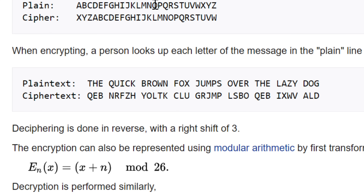Now the way that we translate between these two is really what's different about all the different cryptography methods. This is the simplest one, where we replace letters with other letters by a certain rule — this is known as the substitution cipher.